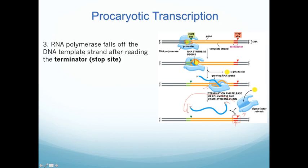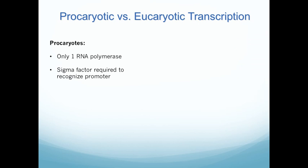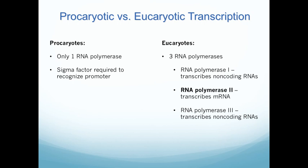Prokaryotic transcription is a little simpler than eukaryotic. In prokaryotes, there is really only one RNA polymerase that does all the transcription, and you need a sigma factor to recognize the promoter. Eukaryotes are more complicated — there are three RNA polymerases that make different types of RNAs. RNA polymerase 1 transcribes non-coding RNAs such as ribosomal RNAs, microRNAs, or tRNAs. RNA polymerase 2 transcribes messenger RNA. RNA polymerase 3 also transcribes non-coding RNAs.